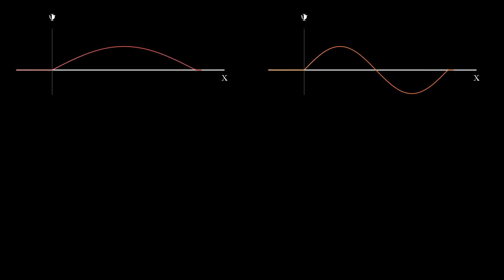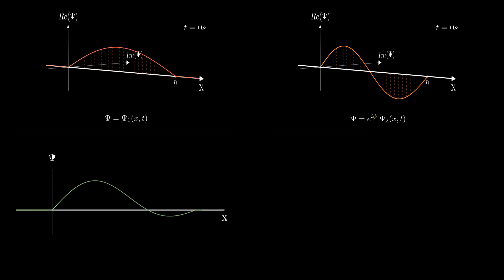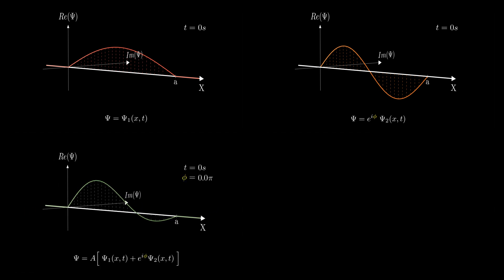Let's start by breaking it down. In this animation you can see the individual components of the wave function. On the top left, we have ψ₁(x, t), and on the top right we have e^(iφ) times ψ₂(x, t). Notice that phi controls the relative phase of these two components. When we superimpose these two states, the overall wave function ψ(x, t) is shown on the bottom left. The interference between ψ₁ and e^(iφ)ψ₂ gives rise to the rich structure you see.